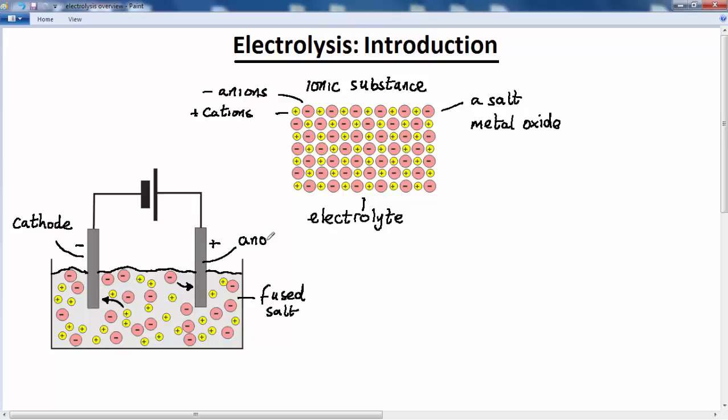This is vocabulary that you need to get familiar with. Cation, positive ion. Anion, negative ion. Cathode is the negative electrode. Anode, the positive electrode. Now, I'm not going to go into what happens at each of these electrodes yet. I just want to familiarize you with this vocabulary.